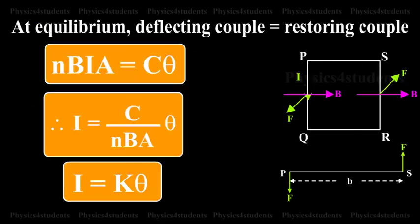At equilibrium, deflecting couple equals restoring couple. NBIA equals C theta. I equals C divided by NBA times theta. I equals K theta.